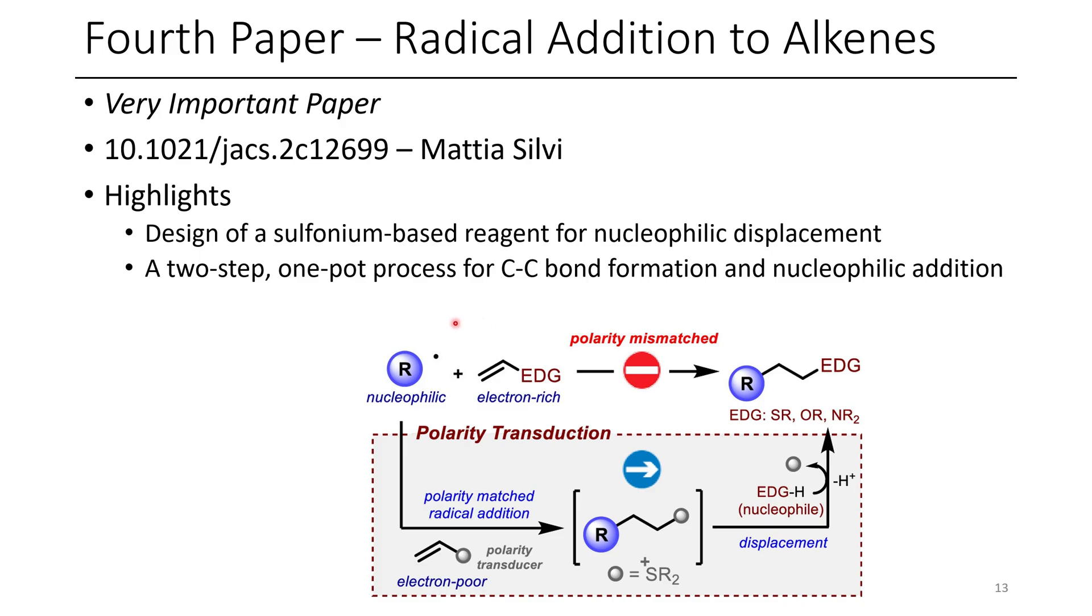What the authors do here is discuss the issue of polarity mismatch. You want to add a nucleophilic radical to an olefin with an electron donating group. This isn't something that's well-suited. So what the authors do instead, they add in a nucleophilic radical to their engineered olefin, which contains this neopentyl sulfonium as a leaving group, and in a subsequent step, in the same pot, they're able to displace this sulfonium with various different nucleophiles.